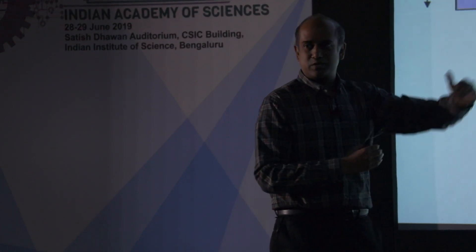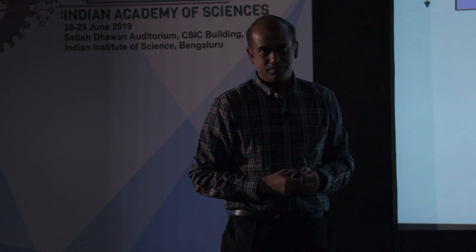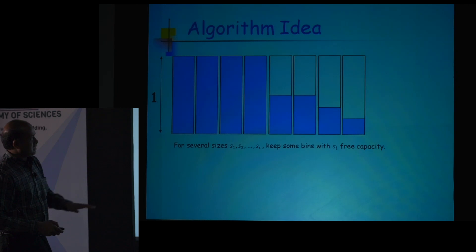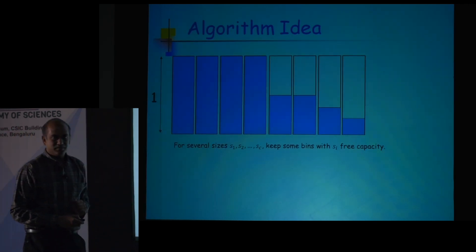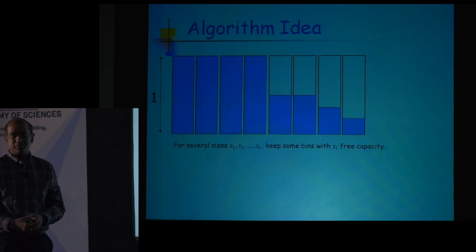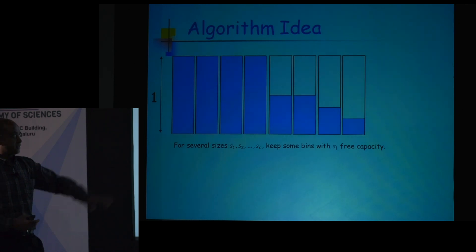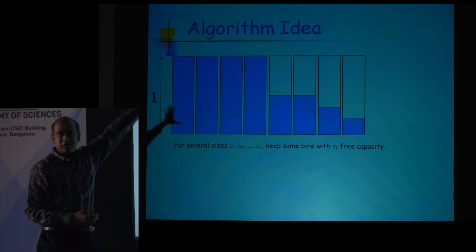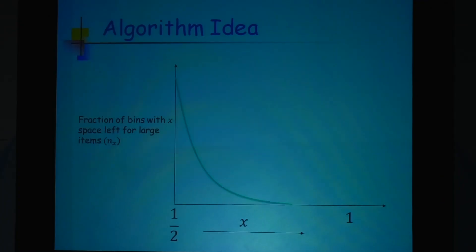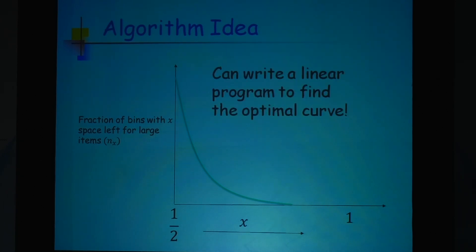The main idea is figuring out how much space to leave in every bin. Do you leave out 50% space, 70% space? You don't know what will happen in the future. So you build some sort of distribution: some alpha fraction of the bins will be 70% empty, some beta fraction will be 90% empty, so that if a big item arrives it can fit. It turns out you can discover this distribution by writing a suitable linear program. That is the main interesting aspect of the algorithm.